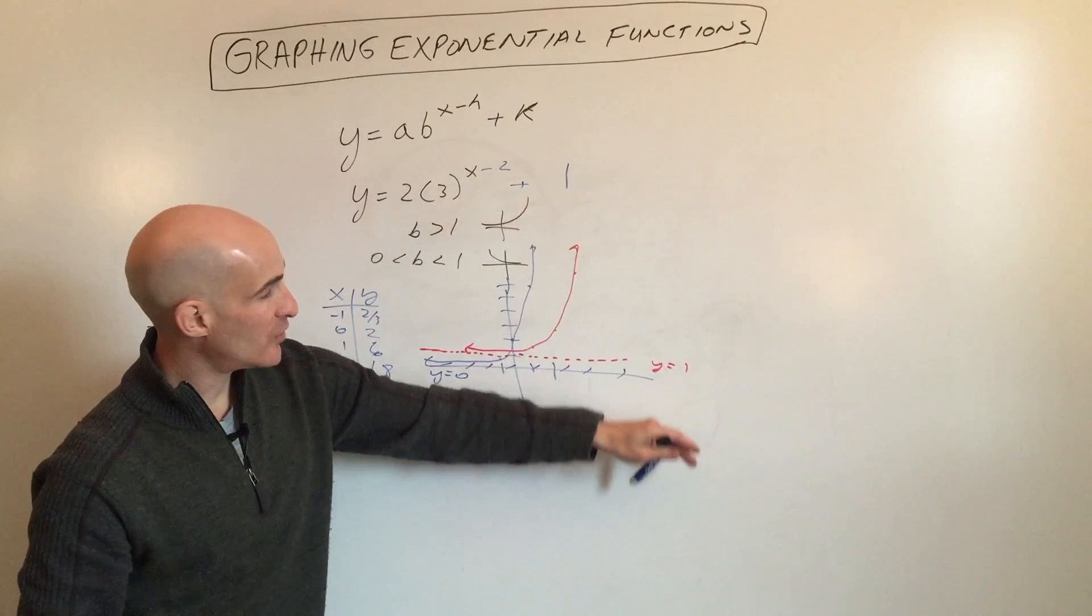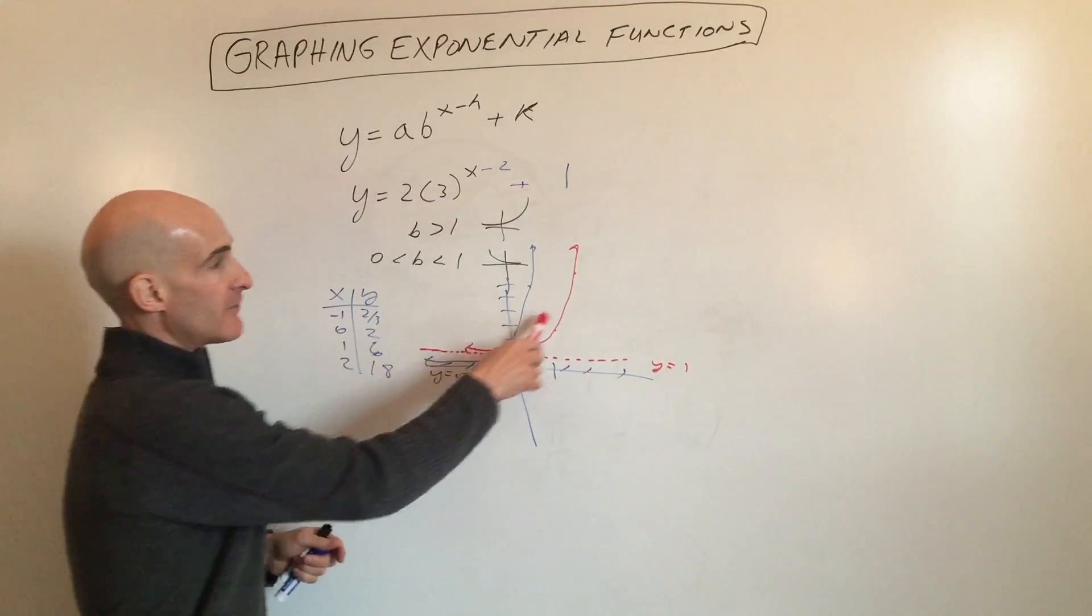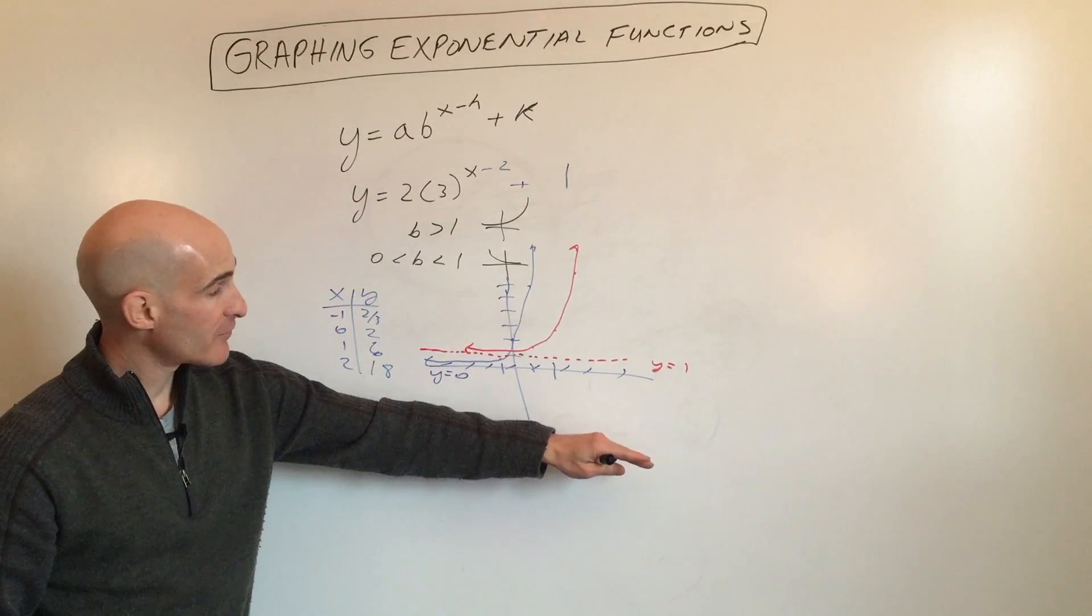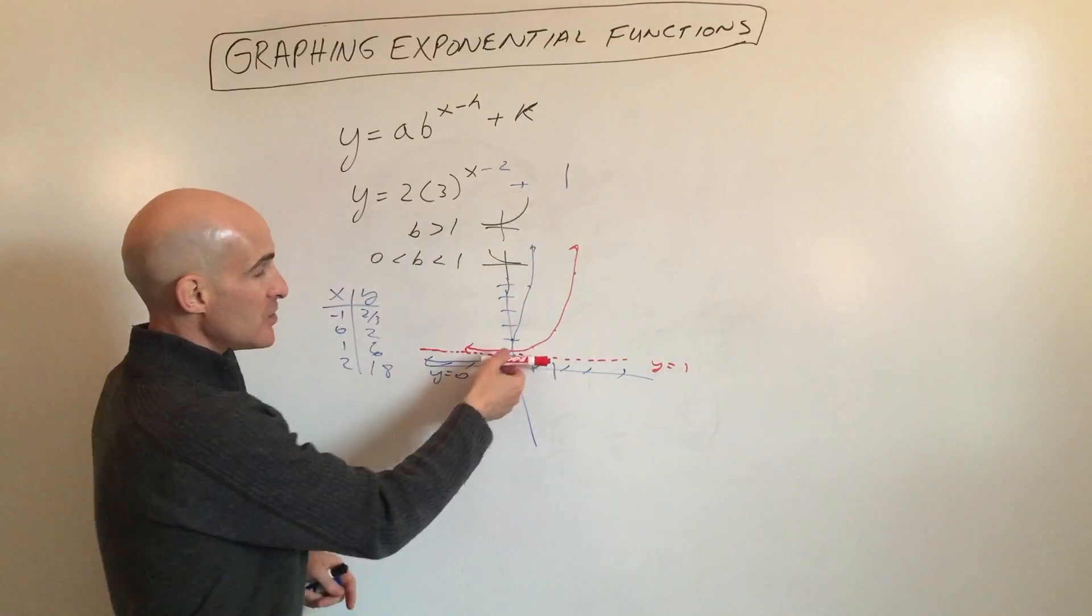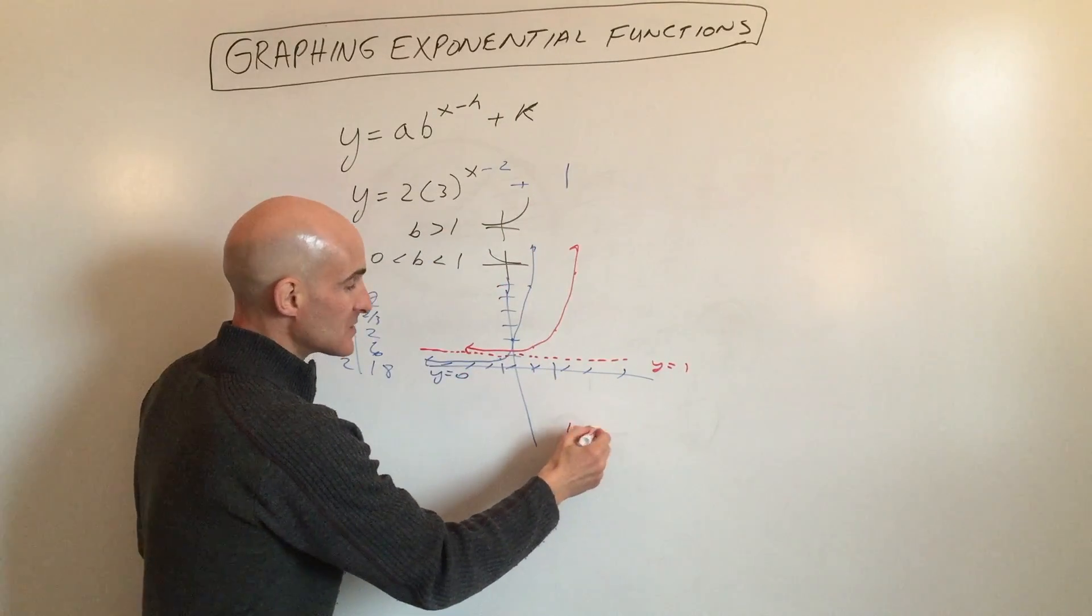That's the vertical direction, what the y values represent. In this case, the graph goes left and right forever, so the domain is all real numbers. For the range, going from low to high, you can see this is above 1. So y is greater than 1.